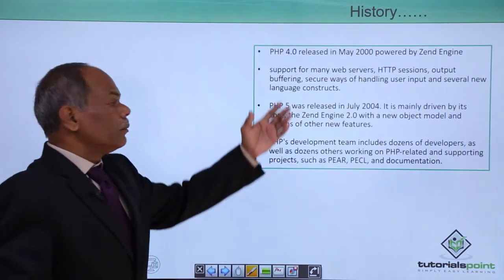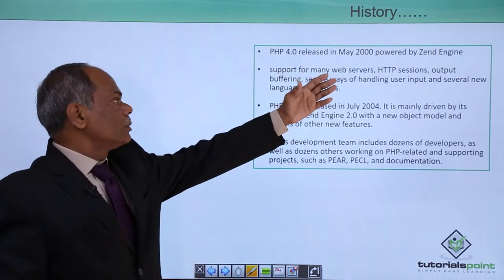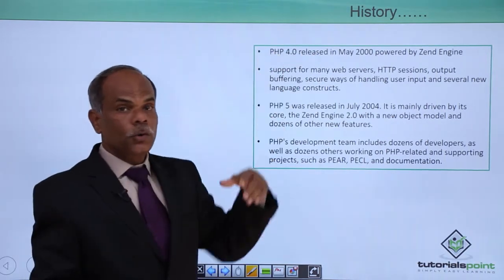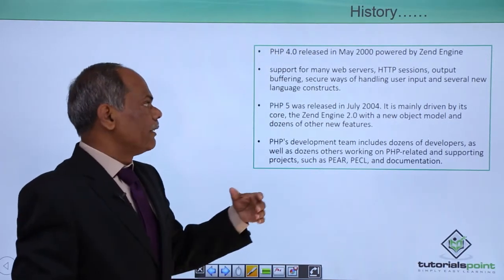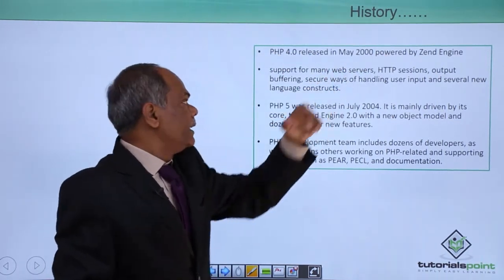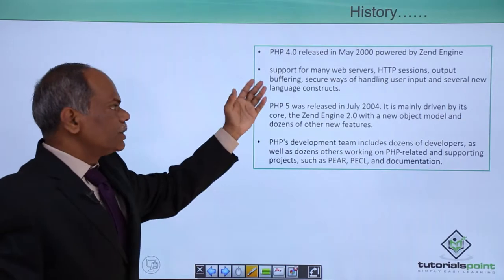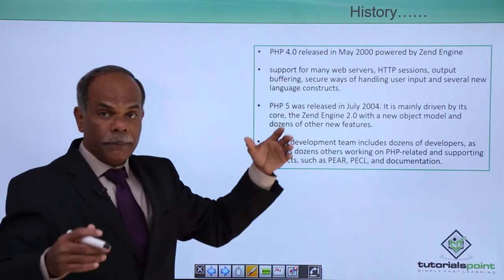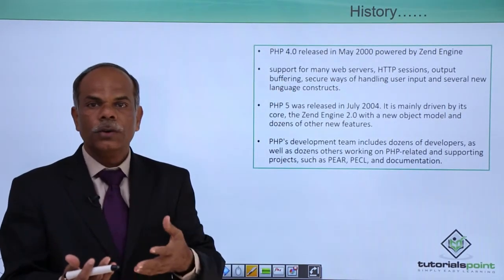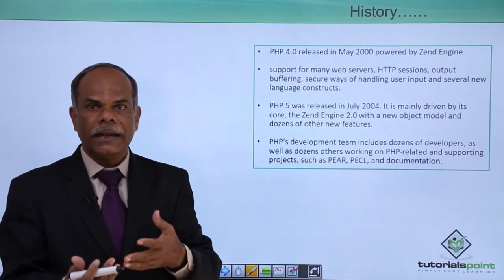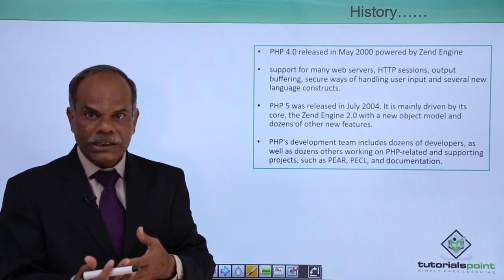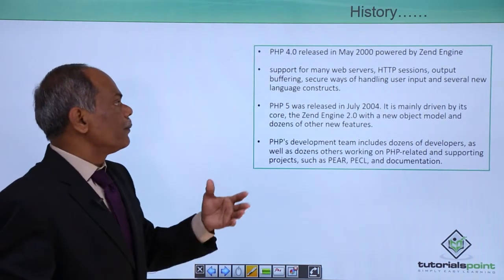In May 2000, PHP 4.0 was developed and powered by the Zend engine. It supports many web servers including Apache, IIS, Nginx, and others, so its application became wider and wider.